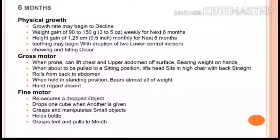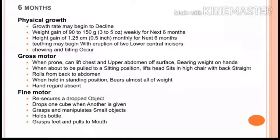In gross motor at six months, when prone the child can lift the chest and upper abdomen off the surface, and can roll from back to abdomen. Hand regard is now absent. In fine motor, the baby can hold a bottle, grasp their feet, pull feet to mouth, and grasp and manipulate small objects placed in their hand.